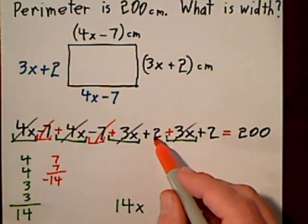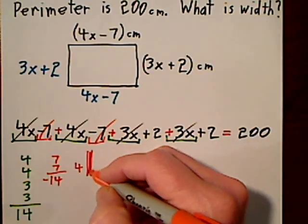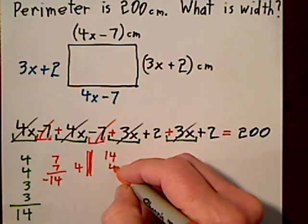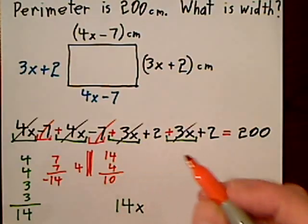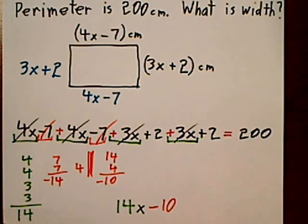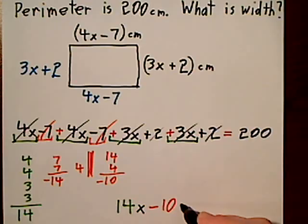Taking care of those, 2 and 2, that's going to give us a 4. I have 1 subtraction. This is a negative 10. So we have 14x, we have negative 10, and we'll just bring down, oh by the way I used up the 2 and the 2, we'll bring down equals 200.